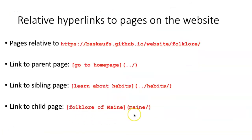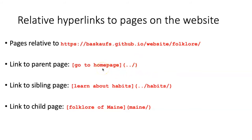If I wanted to actually make the hyperlinks, I use the square bracket notation, and then following that in parentheses, I put the relative path. So this would take me up one level to the parent page or the home page coming from the folklore page. If I wanted to go to the sibling page about habits, I would go up one level and then down to habits. And if I want to go to a child page, I would just say the name of the child page followed by a slash.